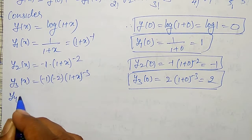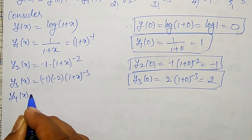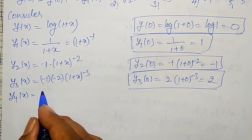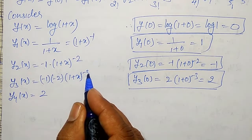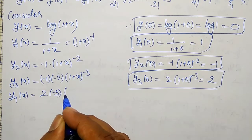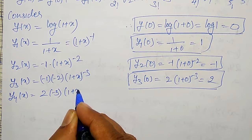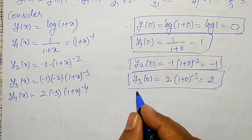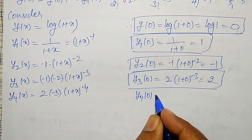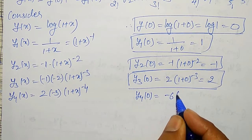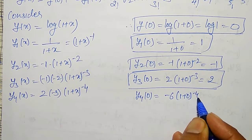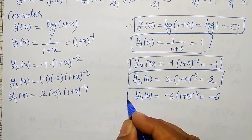Therefore y₄(x) = 2·(-3)·(1 + x)⁻⁴, and y₄(0) = -6·(1 + 0)⁻⁴ = -6.